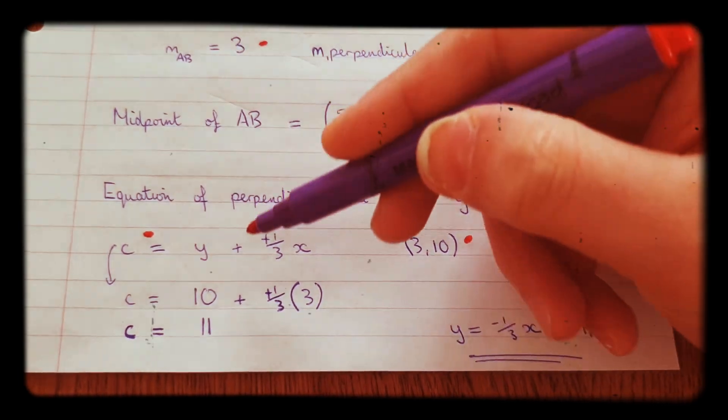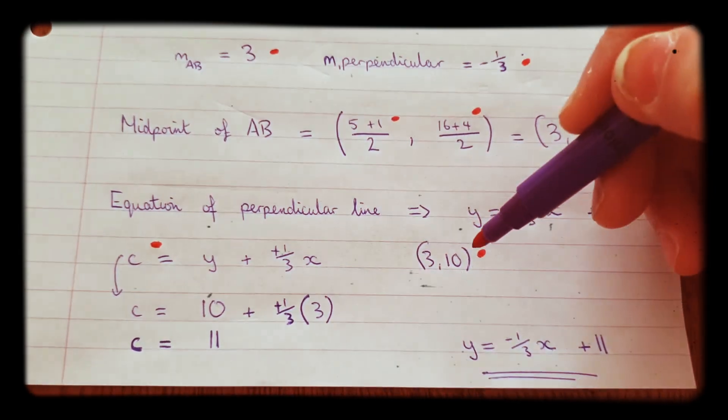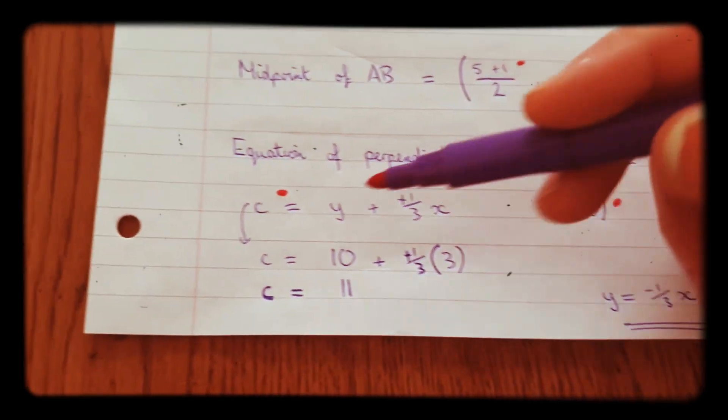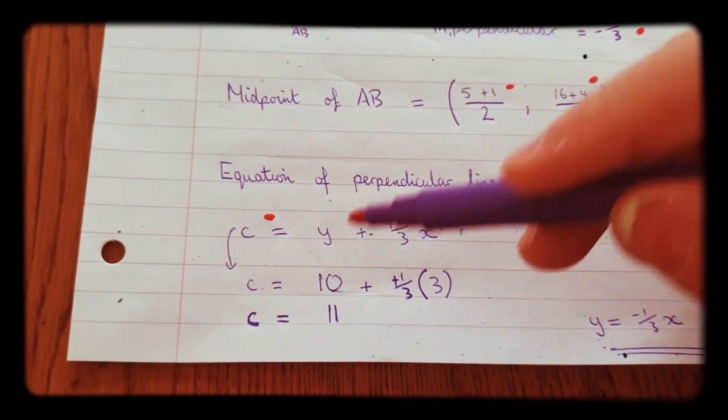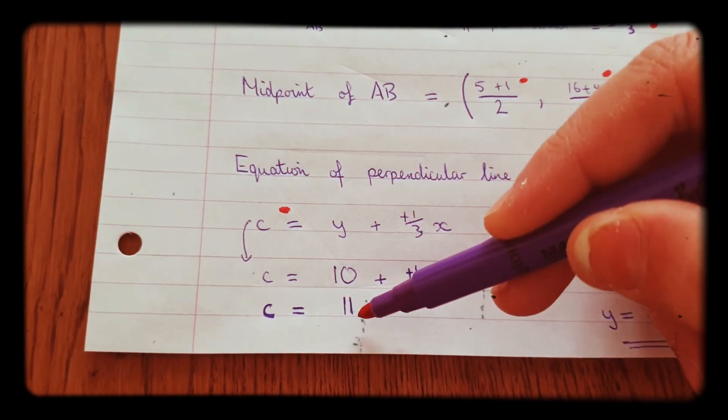So Y equals 10 and X equals 3. So that means C equals 10 plus 1 third of 3. So C equals 11.